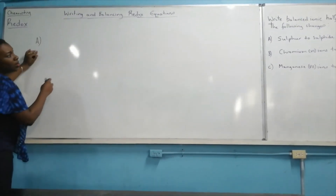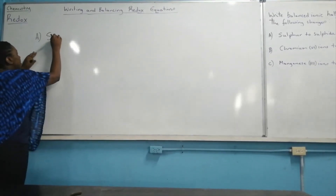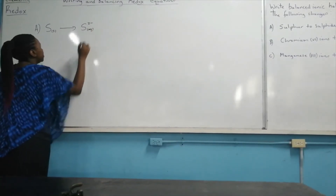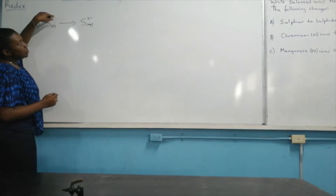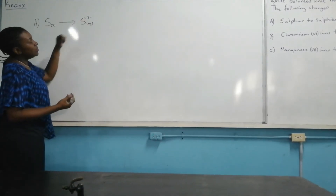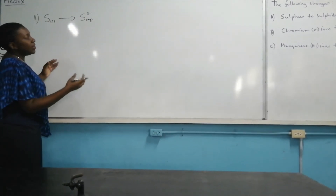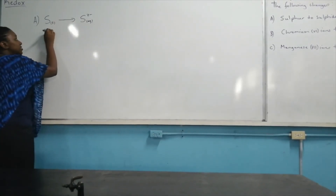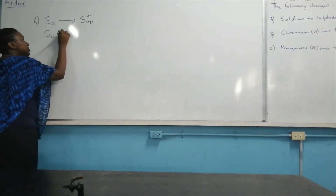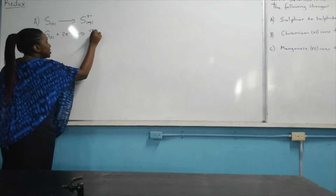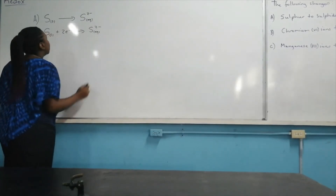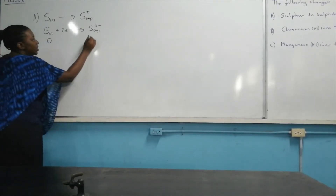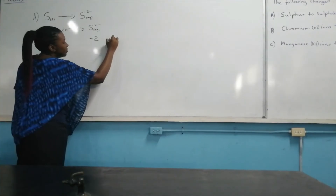For A, we have sulfur being converted to sulfide S²⁻ ions. You can see we have zero charge here and a surplus of negative charges over there, which means electrons are added. So sulfur plus two electrons would form the sulfide ion. Sulfur is now going from an oxidation state of zero to an oxidation state of negative two. This is reduction.